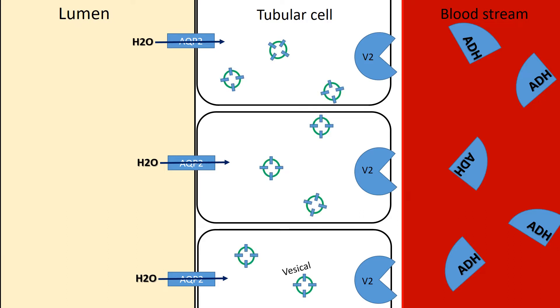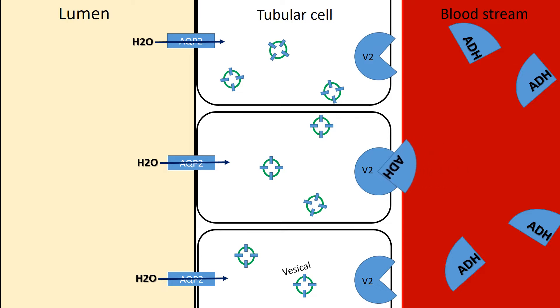You can see here some endosomes which store aquaporin-2 water channels. ADH in the bloodstream binds to the V2 receptors in the collecting ducts of the kidneys and causes a rapid translocation of the aquaporin-2 water channels into the apical membranes of the principal cells.